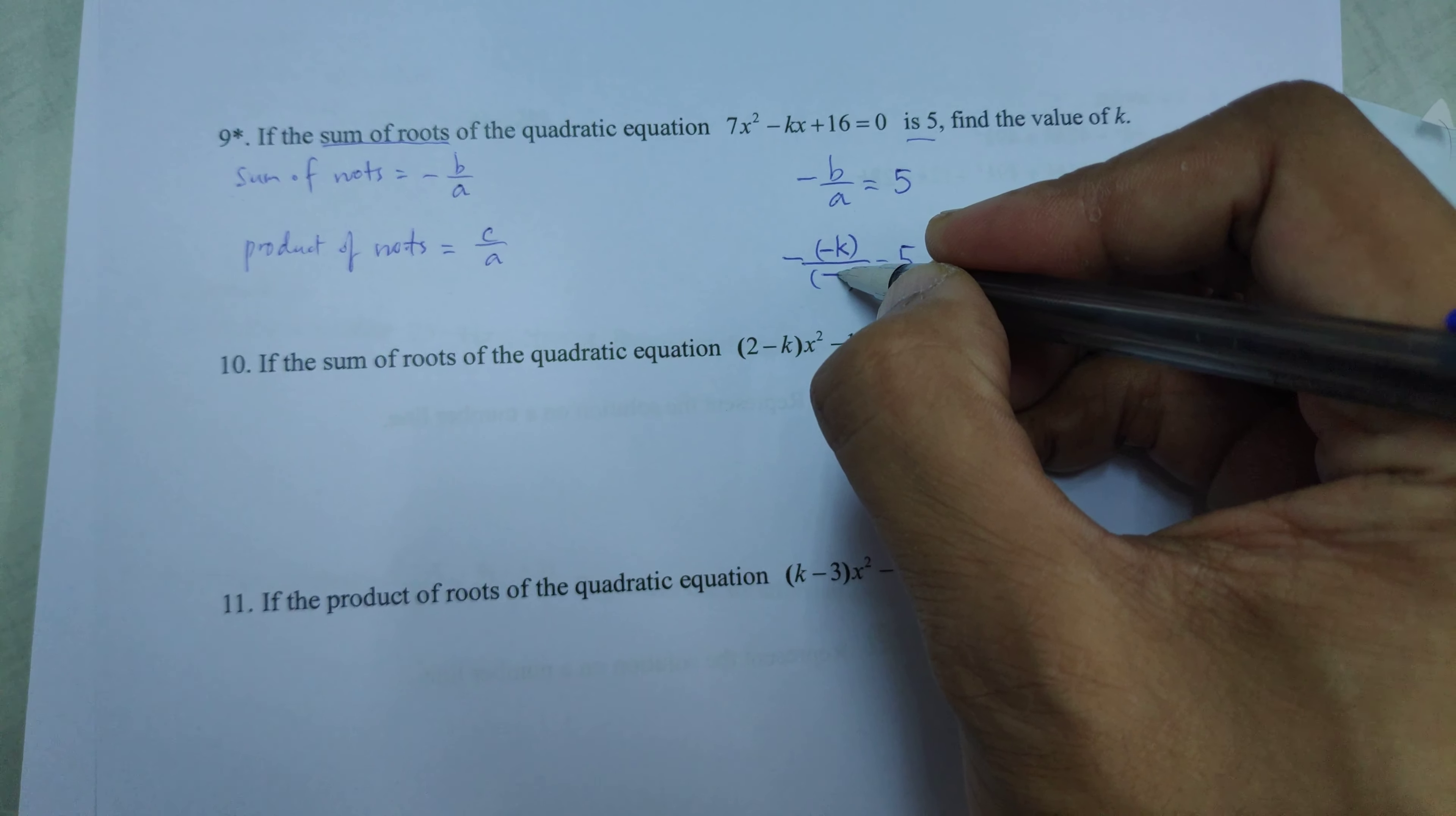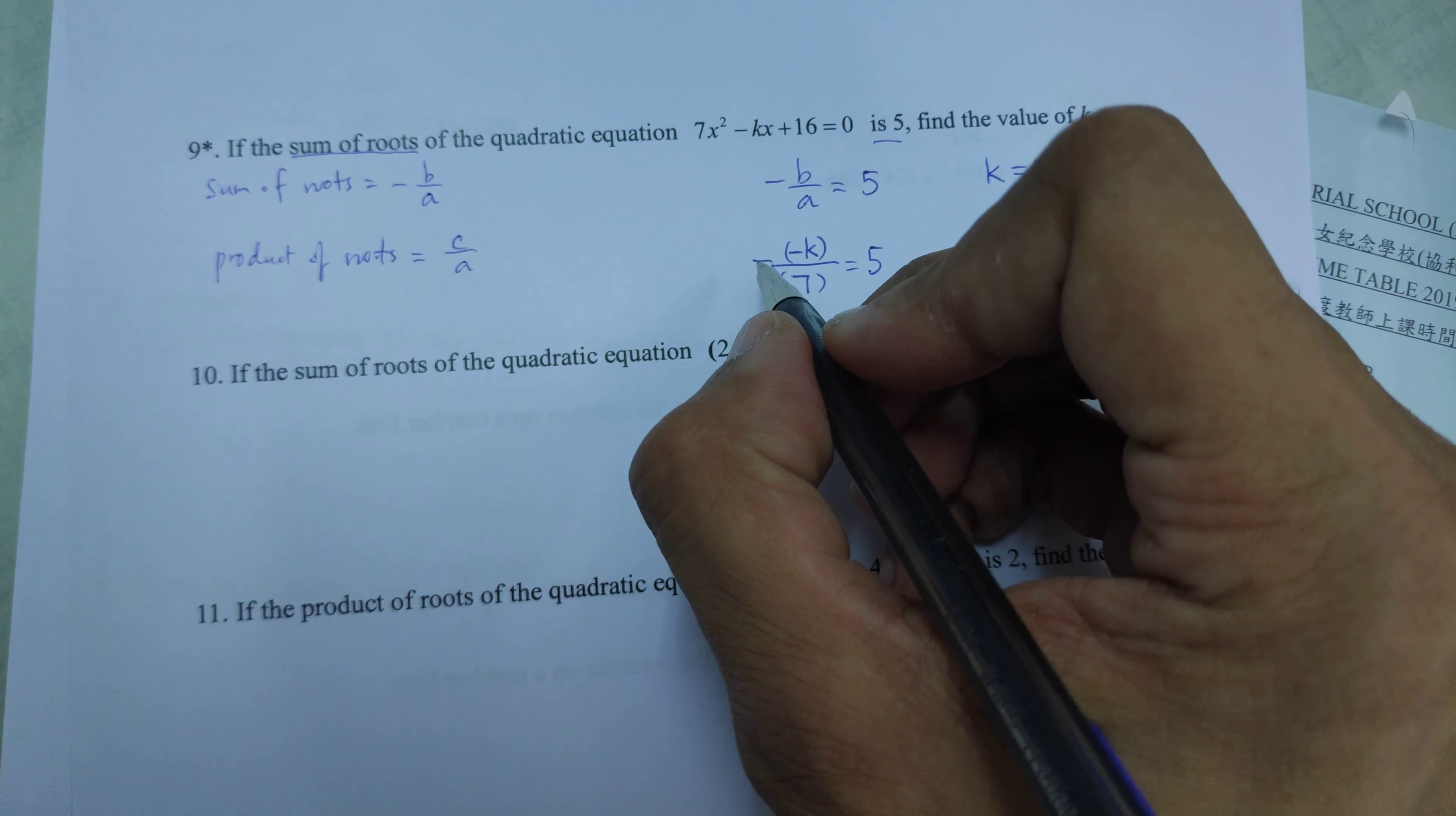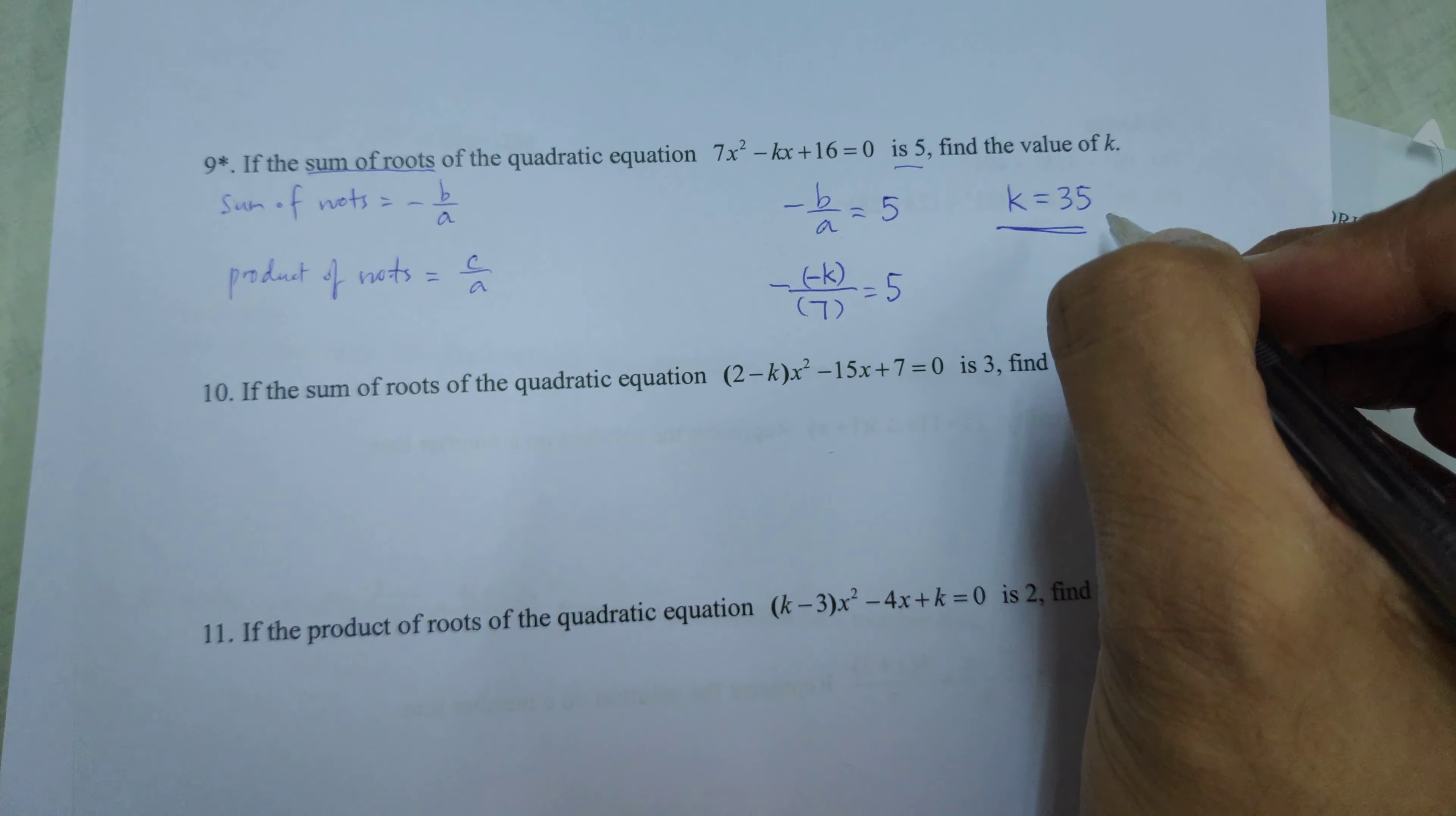Then we do the math. The negative sign cancels out the negative sign inside the bracket for k and becomes positive k. We multiply by 7, and that gives us 35.